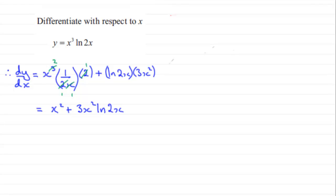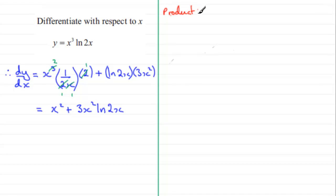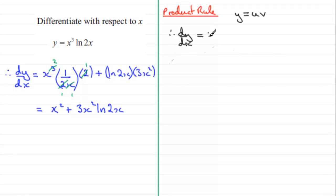Now if you want this broken down in slower steps, here's how we go about it. What we have is two functions of x being multiplied together, so we use the product rule for differentiation. The rule is: if y equals two functions of x, which we call u and v, then dy/dx equals u times dv/dx plus v times du/dx.